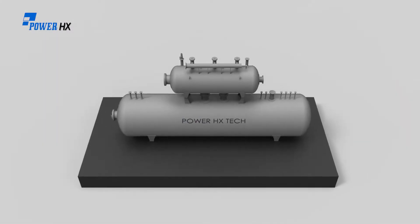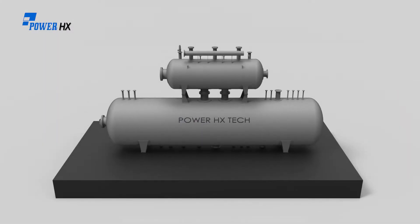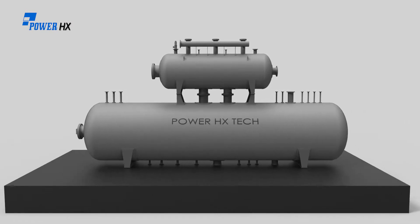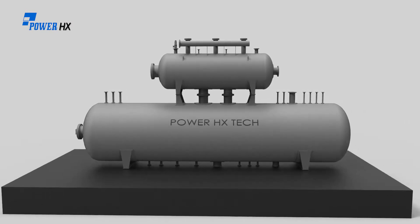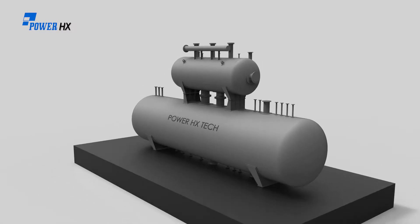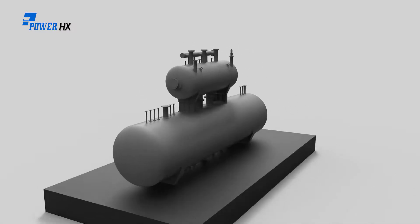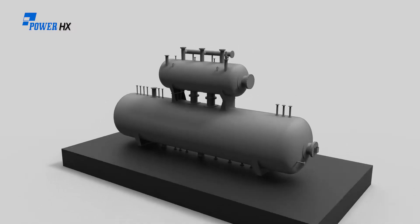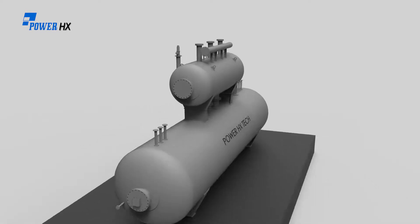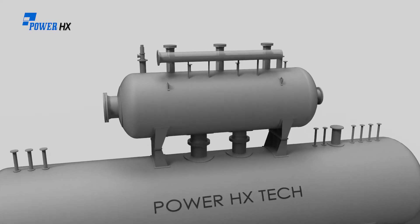A de-aerator is defined as a thermo-mechanical device for removal of dissolved gases, primarily oxygen and carbon dioxide, from water. Additional features are heating of feedwater and storage of feedwater. This equipment is spray tray type and steam flow is counter-current.